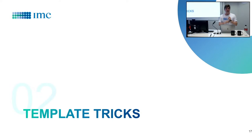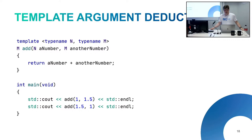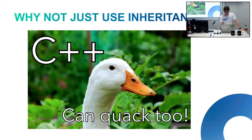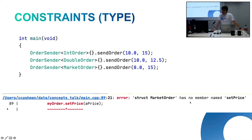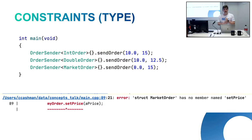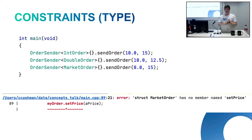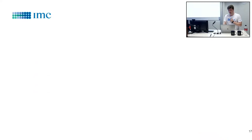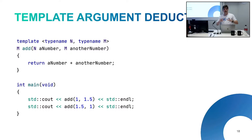Did you guys notice when we called these functions, we didn't actually specify what template we were using? OrderPlacer had a sendOrder function templated based on the volume type. What we're seeing here is that we don't actually need to specify it if it's obvious what it is — the volume is 15, it's an int; the volume is 12.5, it's a double. That's called template argument deduction. It's very useful and makes your code a lot cleaner, though you can also run into some nasty bugs.